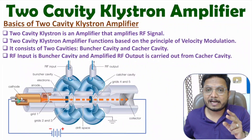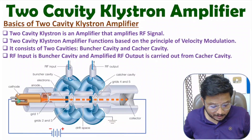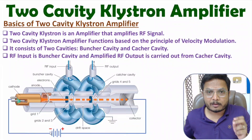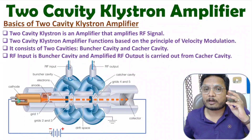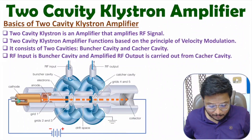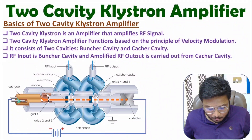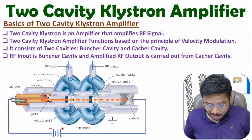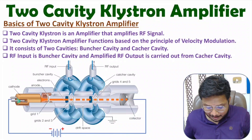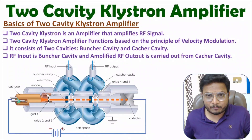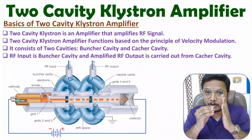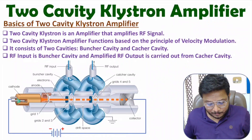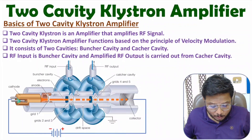The cathode generates an electron beam because it is connected with the negative terminal of the supply. The negative terminal generates electrons, and those electrons move toward the collector. The reason electrons move in that direction is that the collector is connected with the positive terminal of the supply, so the positive plate attracts the electrons. Thus, electrons are accelerated from cathode to collector.